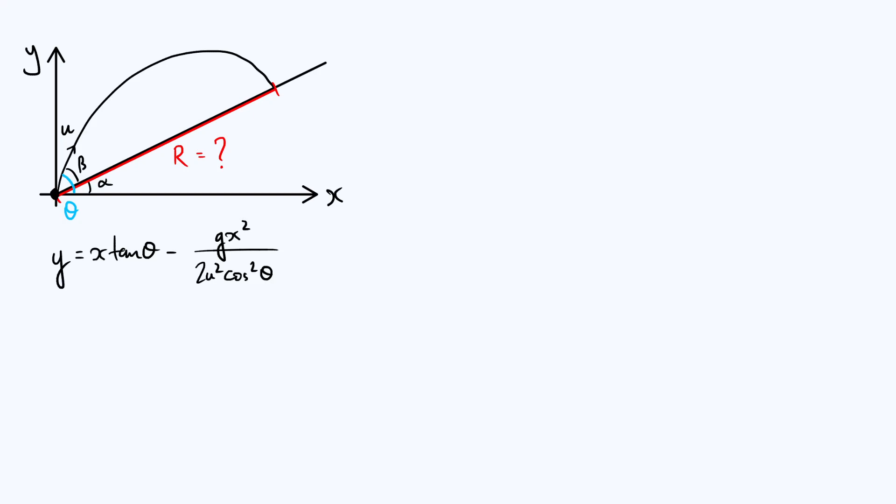This equation can be derived fairly straightforwardly by applying the SUVAT constant acceleration equations in both the x and y directions and eliminating the time variable. If you'd like to see all the details of that, then I have a video that you can have a look at. However, we're going to use this equation as our starting point for this video.